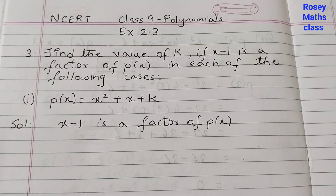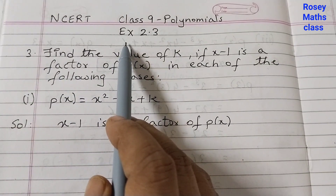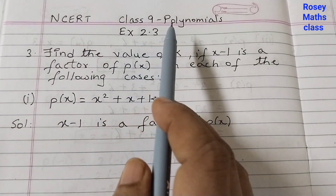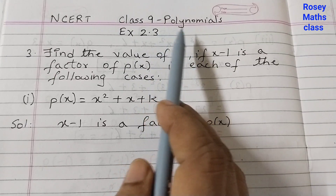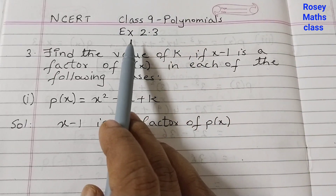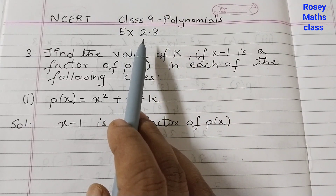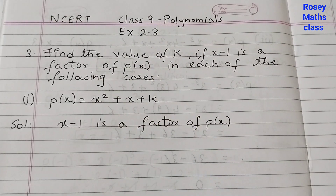Hello students, welcome back to Rosie Maths class. In today's video we are going to discuss question 3 of exercise 2.3, chapter 2, Polynomials. This is in your new textbook given as exercise 2.3. In the old book it's given as 2.4.